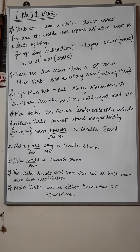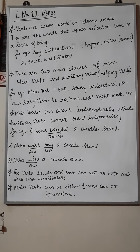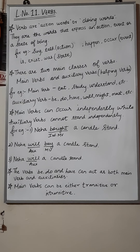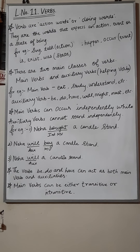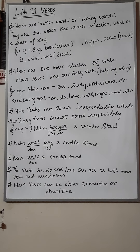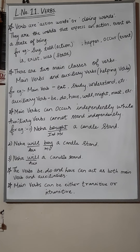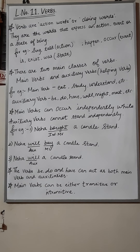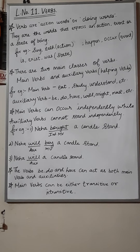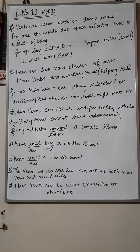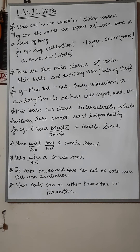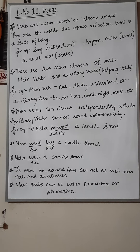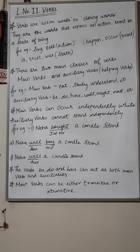There are two main classes of verbs. Verbs are divided into two classes — main verbs and auxiliary verbs. Auxiliary verbs are also known as helping verbs. Main verbs include eat, study, run, accompany, understand, etc. Auxiliary verbs include be, do, have, will, might, must, can, should, etc. Main verbs can occur independently while auxiliary verbs cannot stand independently.